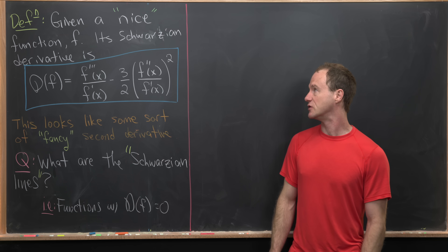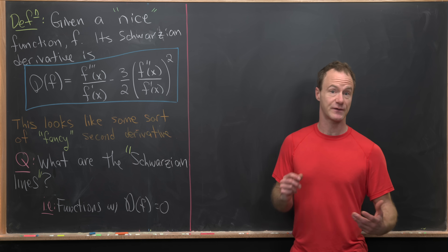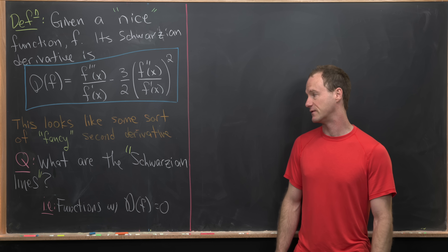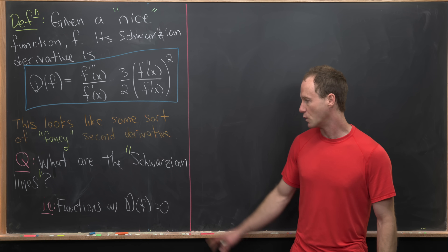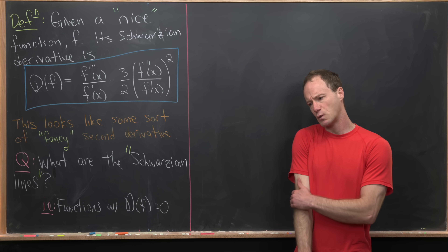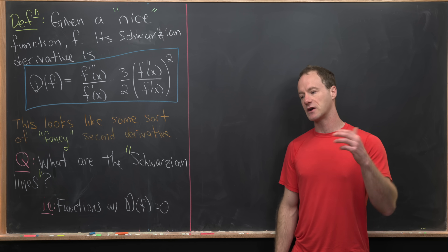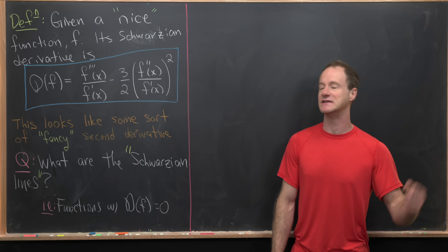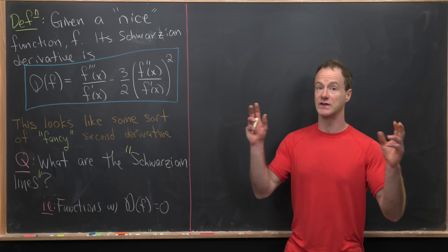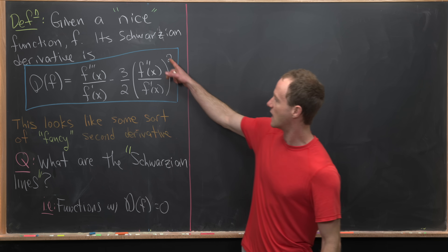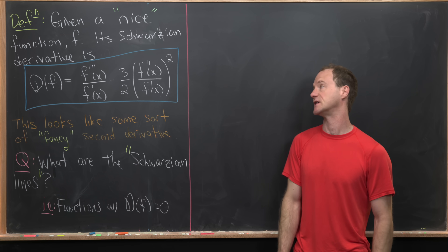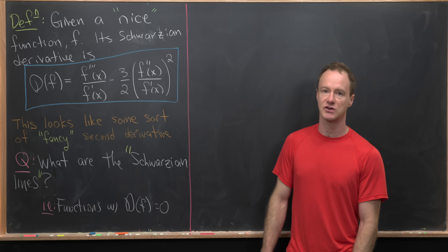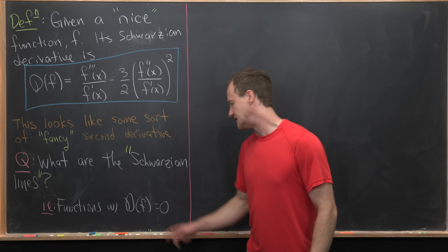There are many things you can do with this operator, like solving differential equations. Today we're going to solve maybe the simplest type, which leads to the question: what are the Schwarzian lines? Think about a linear function — it has the property that its second derivative is zero. Since the Schwarzian derivative is a generalization of the second derivative, functions that become zero after taking the Schwarzian derivative could be thought of as Schwarzian lines. We want to determine all functions f that satisfy df equals zero.